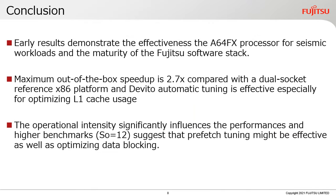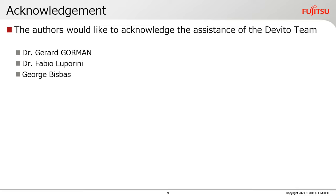In conclusion, early results demonstrate the effectiveness of the A64FX for seismic workloads and the maturity of the Fujitsu software stack. The maximum out-of-the-box speedup is 2.7x compared with a dual-socket x86 platform. Devito auto-tuning is effective, especially for optimizing L1 cache usage. The operational intensity significantly influences performance, and higher-order benchmarks suggest that prefetch tuning might be effective in combination with optimizing data blocking. Thank you for listening. We appreciate the Devito team for their kind support.